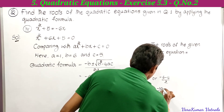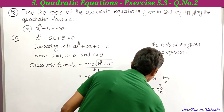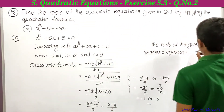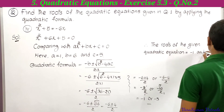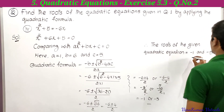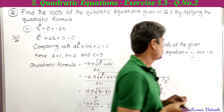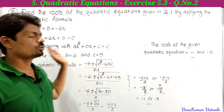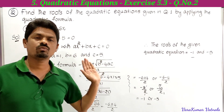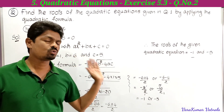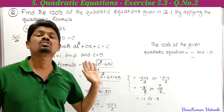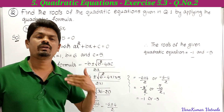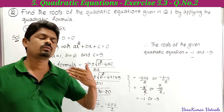Therefore the roots of the quadratic equation are −1 and −5. This is the fourth part. We have found the roots for all four quadratic equations using the quadratic formula. That's all for today's class; we will meet in the next class with another problem. Thanks for watching.